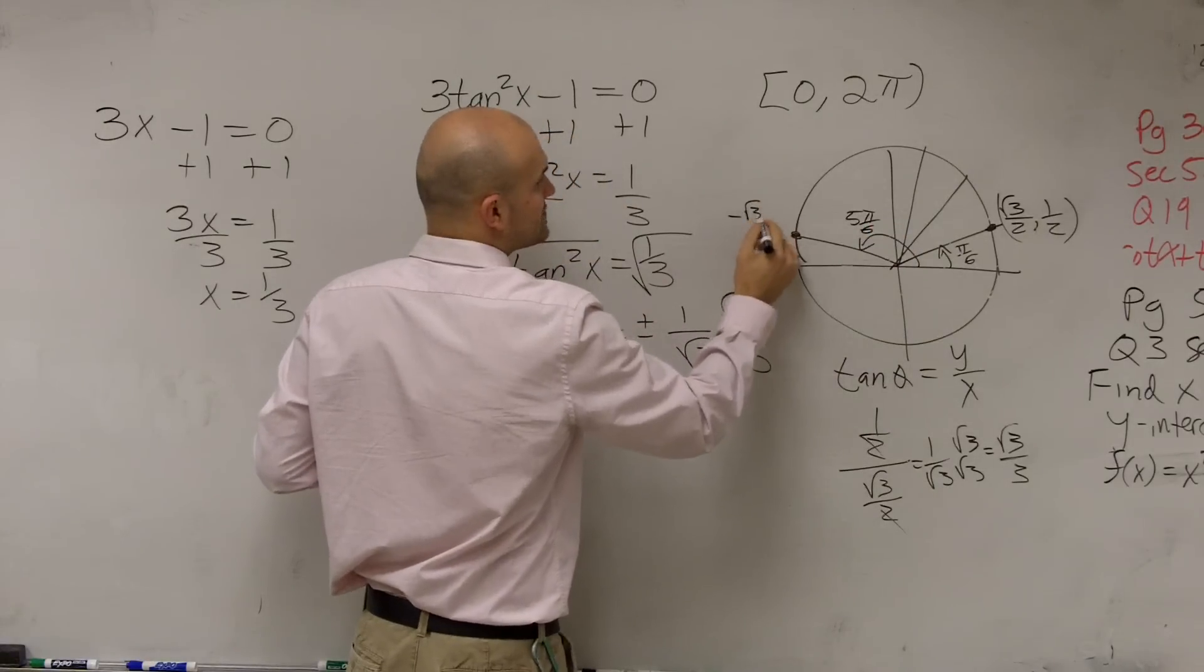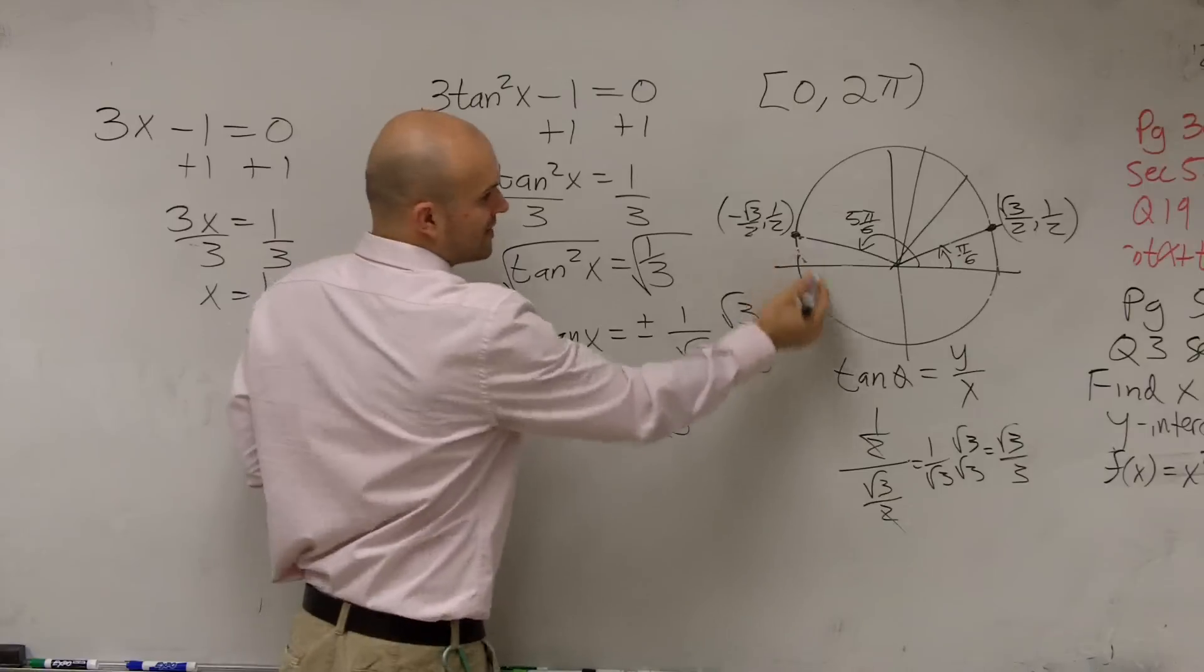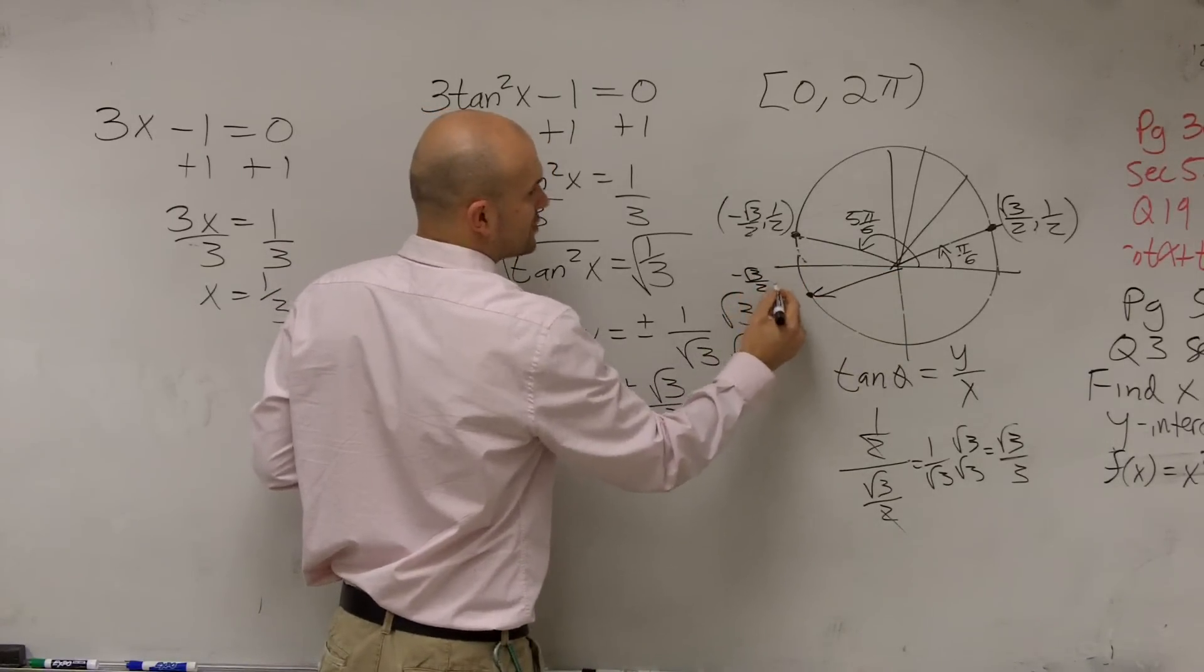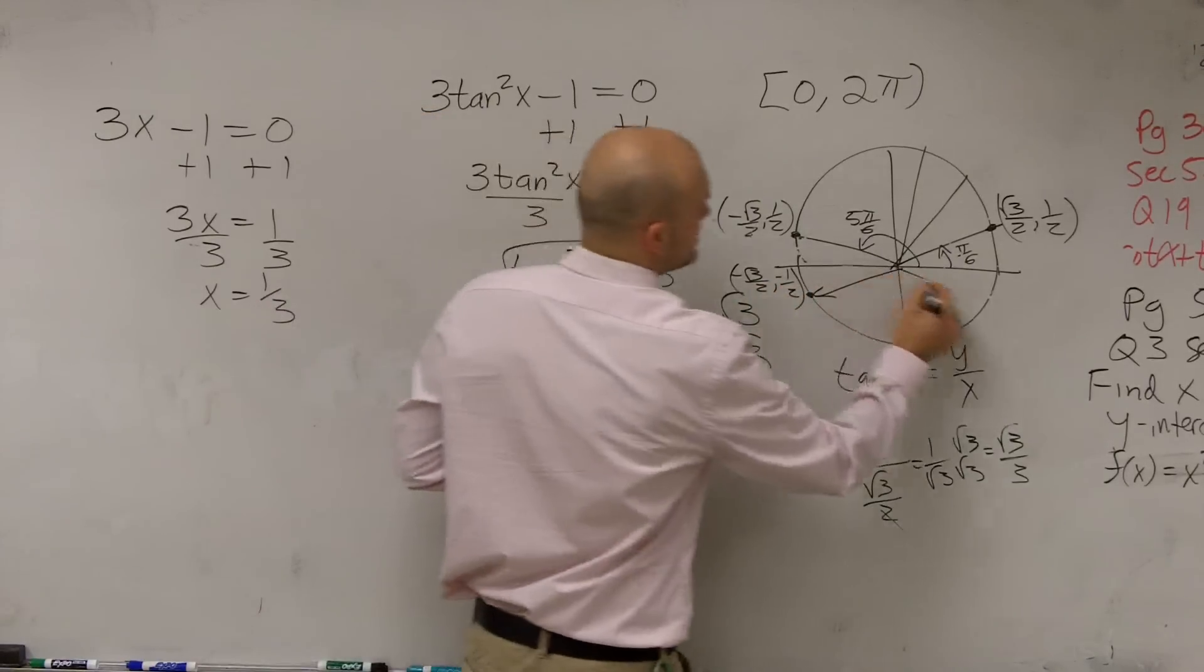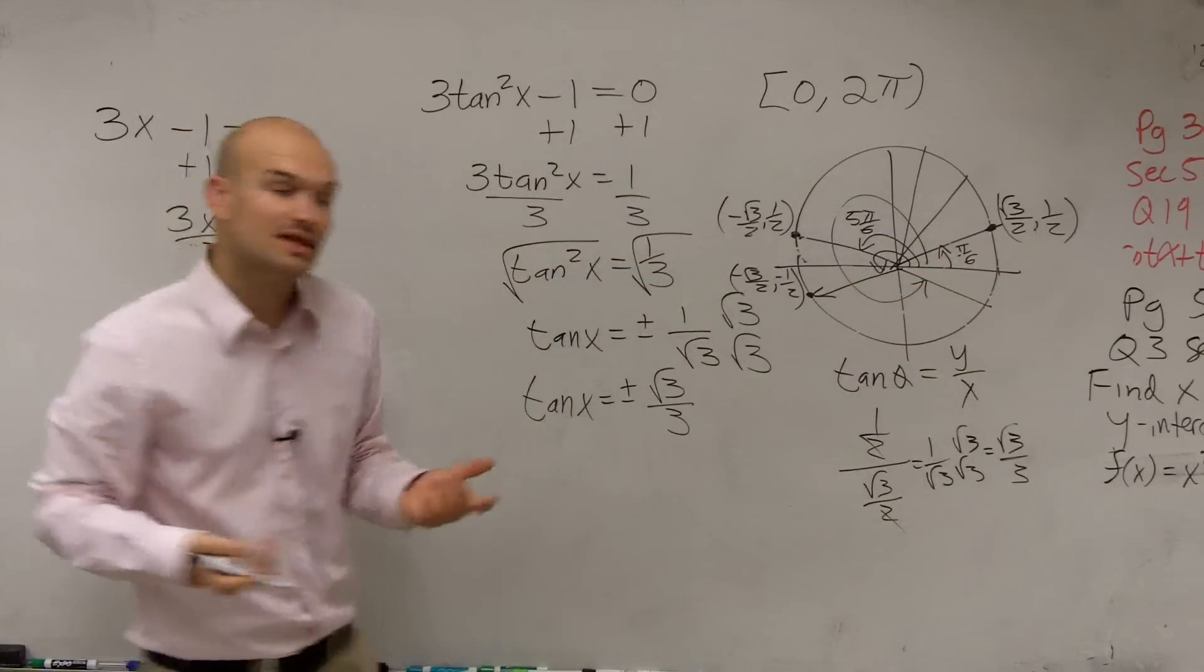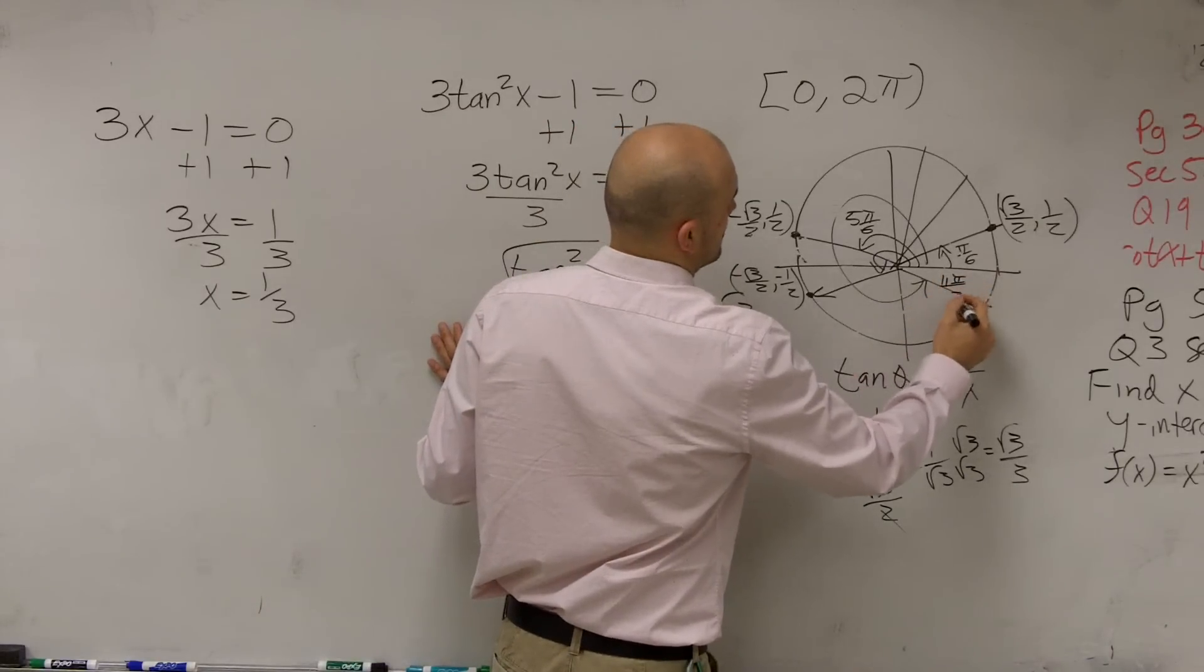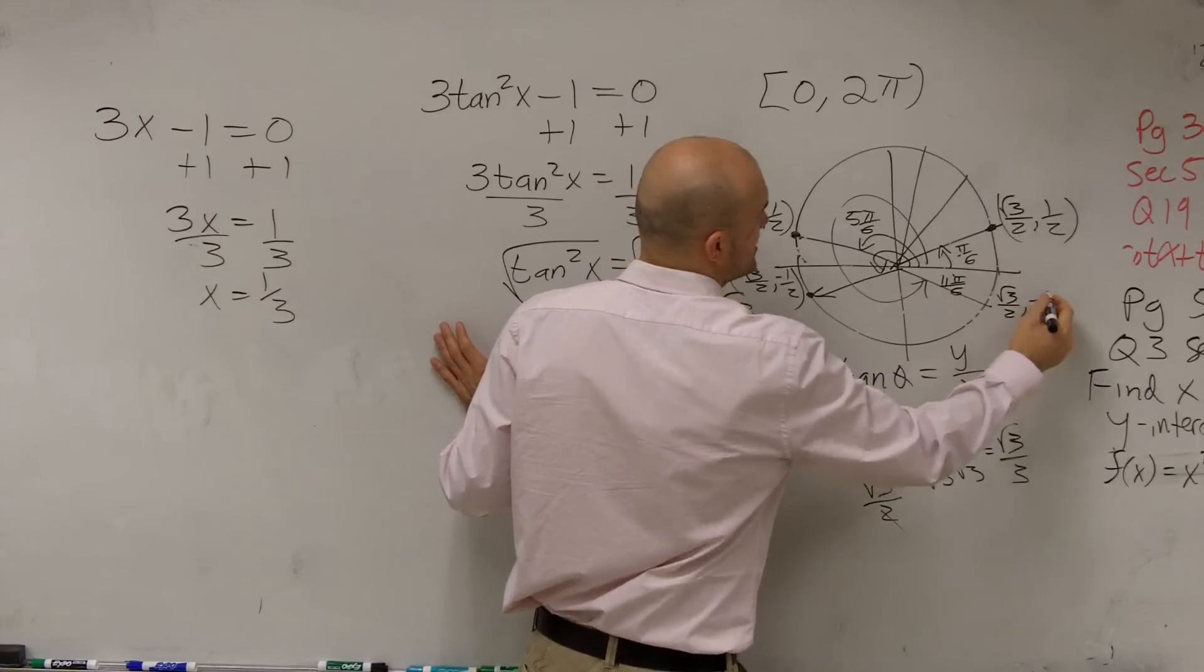The next point, which is 7π over 6, has a negative square root of 3 over 2 comma negative 1 half. And then our last point is going to be 11π over 6, as that angle has a coordinate point of square root of 3 over 2 comma negative 1 half.